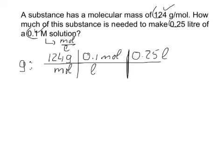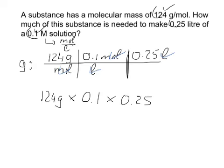Now we can do something really clever — we can cancel out our units. The mole here cancels against the mole there. The liter cancels against the liter. All we have left is 124 gram times 0.1 times 0.25, with no units remaining. We put that into a calculator and we get 3.1 grams. That is the answer: we need 3.1 grams of this substance to make up 0.25 liters of a 0.1 molar solution. I didn't use any equations — I was simply guided by the units: gram per mole, liter, and mole per liter.